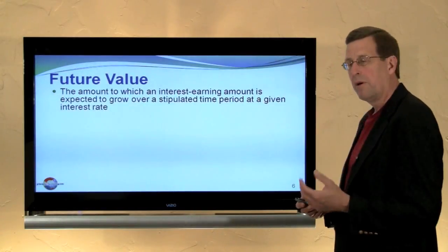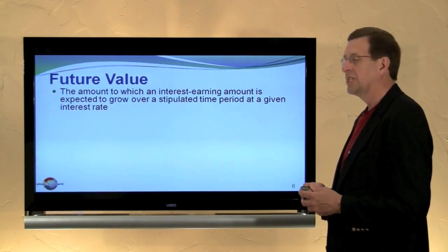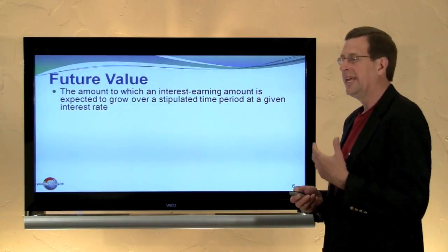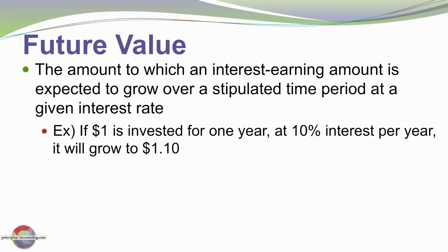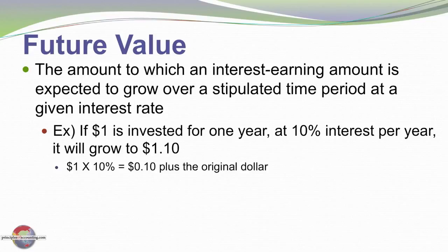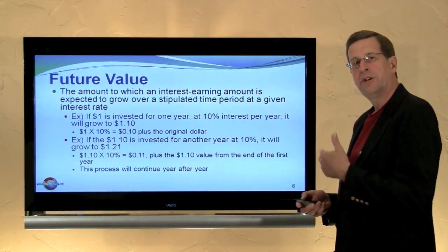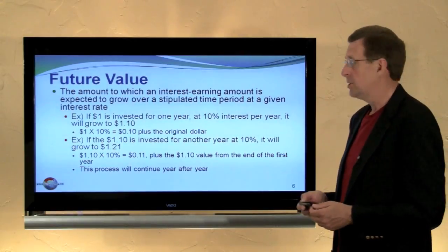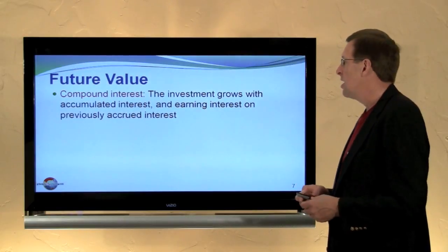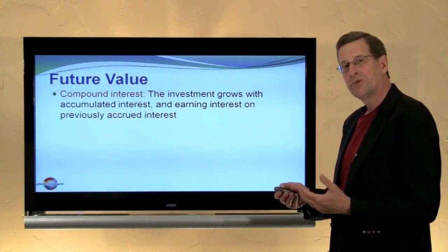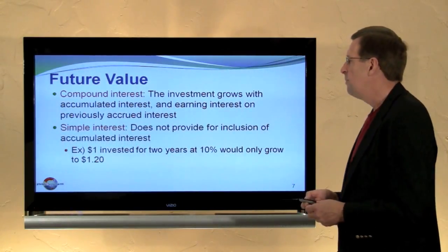The future value is the amount to which an interest-earning amount is expected to grow over a stipulated time period at a given interest rate. For example, if $1 is invested for one year at 10% interest, it would grow to $1.10 — 10 cents of interest added to the $1. In the second year, $1.10 invested at 10% earns 11 cents, growing to $1.21. This process continues year after year — future value amounts are also called compound interest.